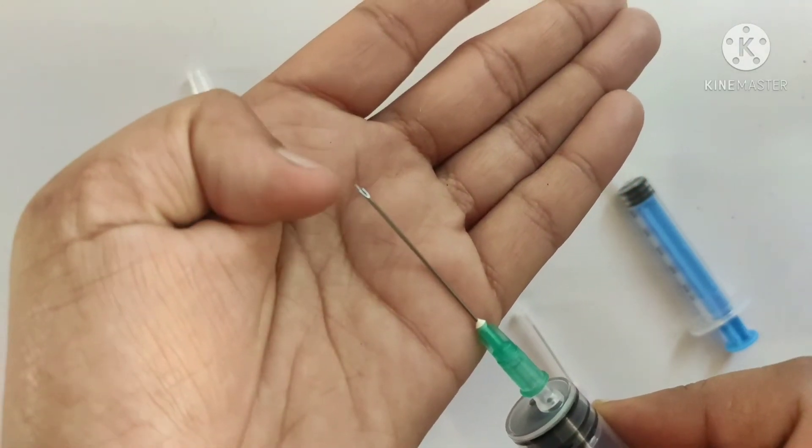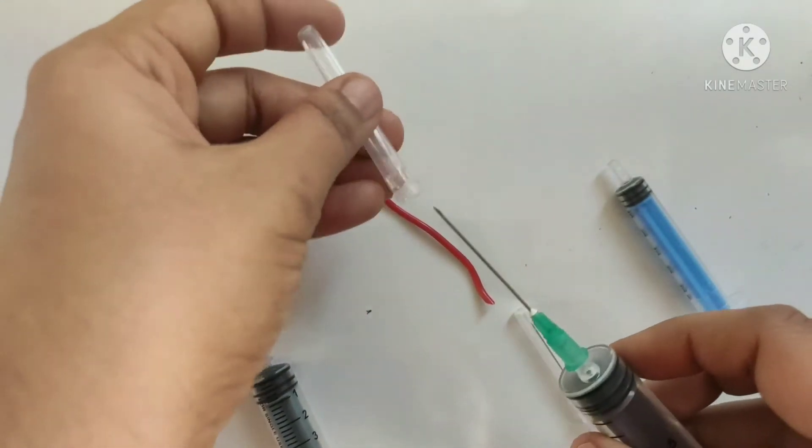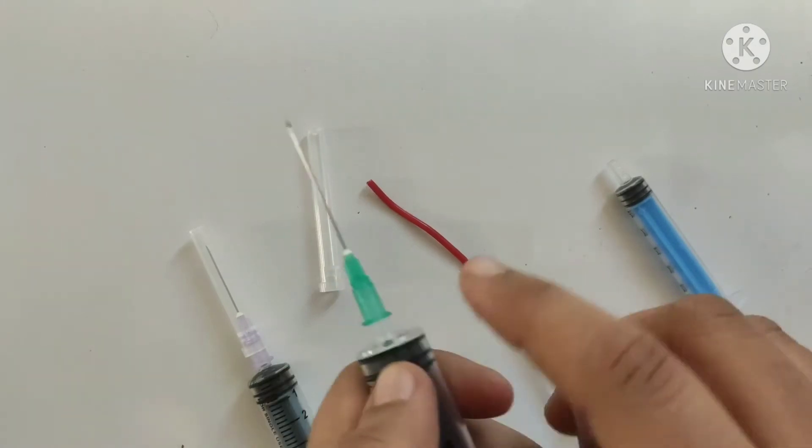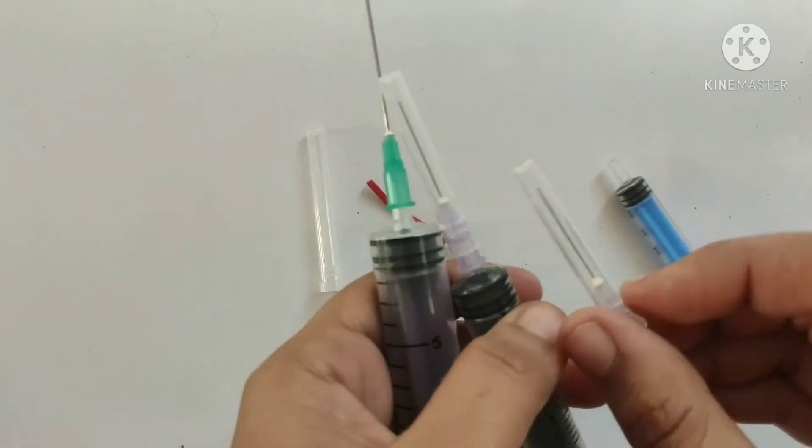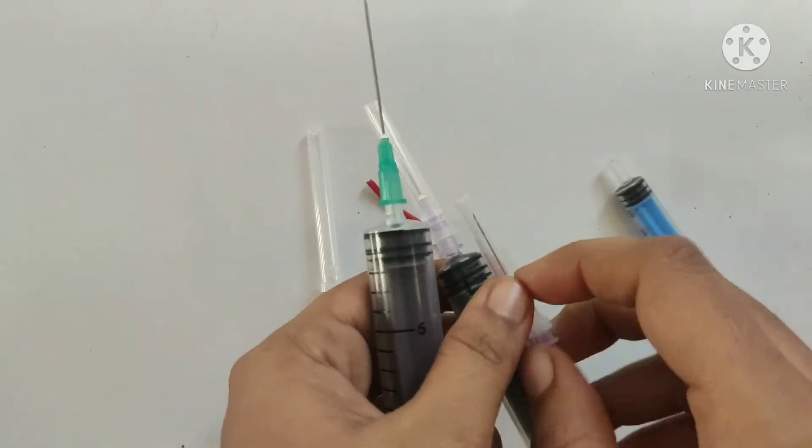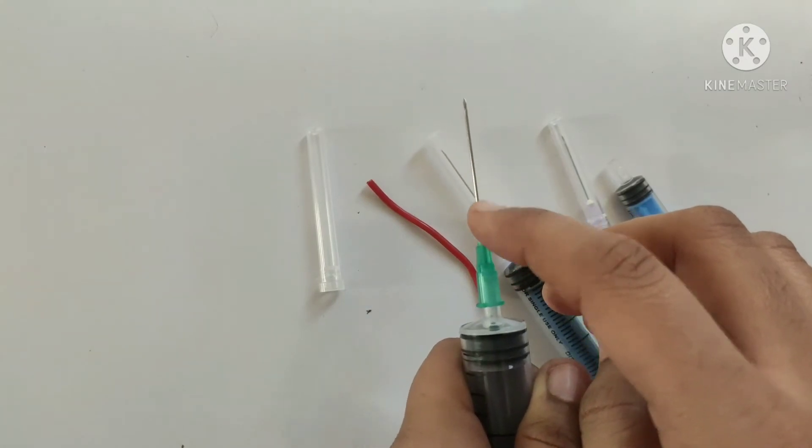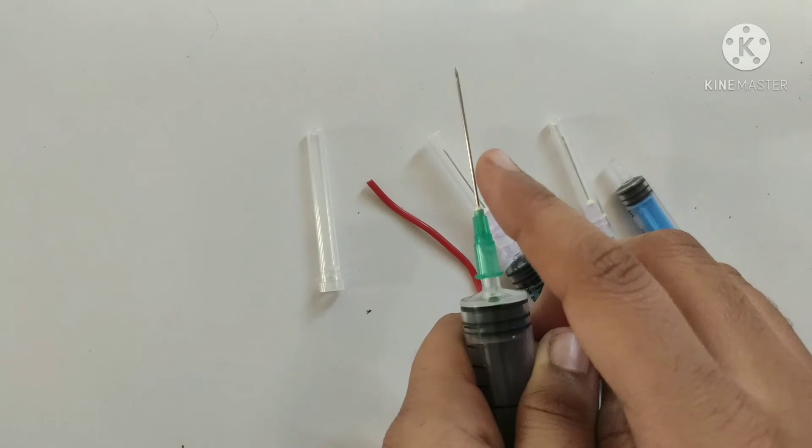This is known as beveled tip. Now the hub of different needles is of different color. See, it is green color, this one is purple color, and this is also purple color. The color of the hub indicates the inner diameter of the shaft when it is measured in gauge or millimeter. Higher the number of gauge, smaller will be the diameter.